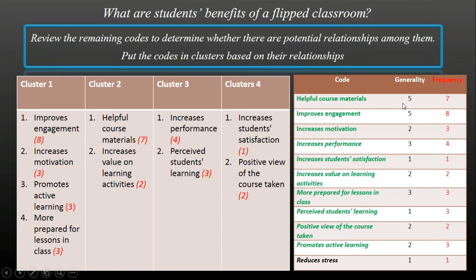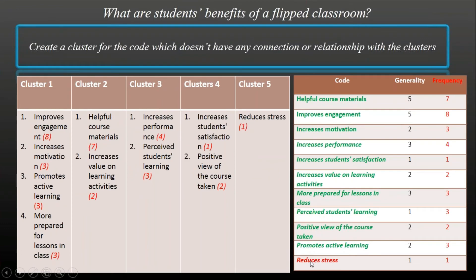If you have more than four clusters, you do the same thing — trying to find out whether there's a relationship between codes. There are individual differences here. Qualitative analysis is a subjective experience. I may bring one code here, but in your case you may think there's no connection between helpful course materials and increases value on learning activities — it all depends on the individual. You have to be creative but also make sure you have a solid argument to support bringing that code under a specific cluster. Also, you may have developed a code that is a standalone, so you create a cluster just for it.